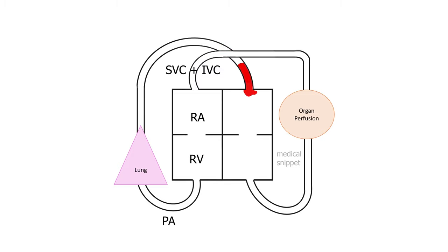The oxygenated blood reaches the left atrium via the pulmonary veins. Mitral valve opens during diastole and blood reaches the left ventricle. When the left ventricle contracts, the blood is pumped into the aorta for systemic circulation.